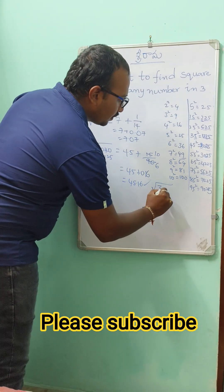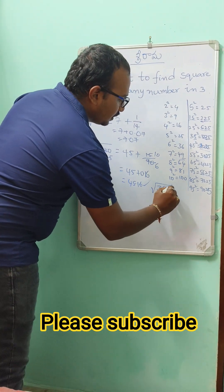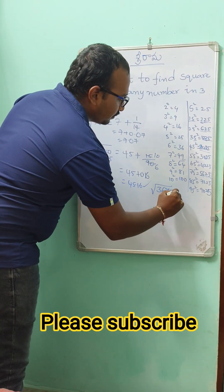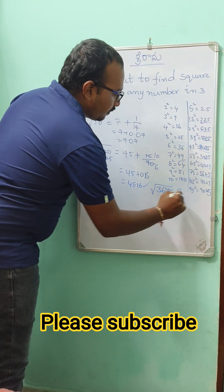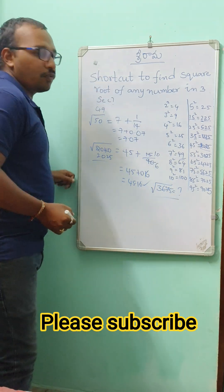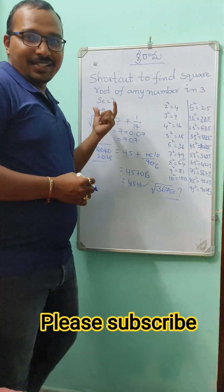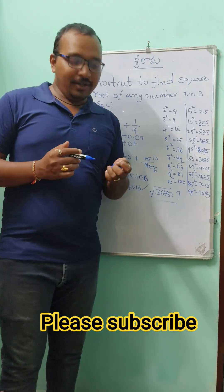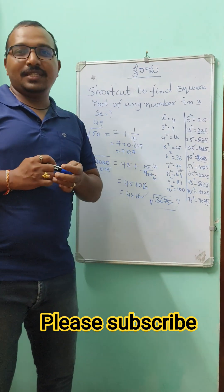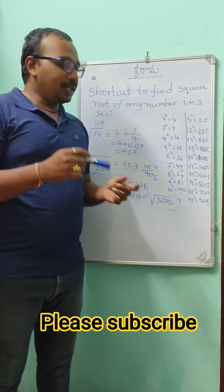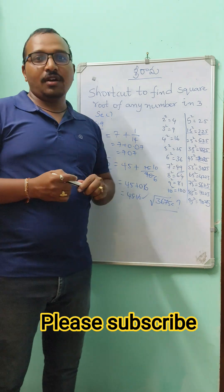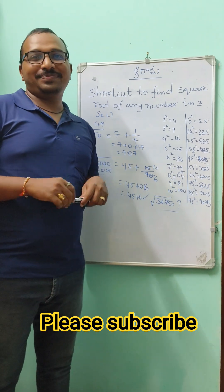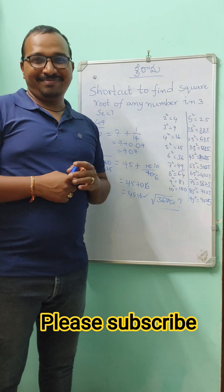Now find the square root of 3675 using this same method. Please subscribe and comment in the section below with your answer. Thank you.